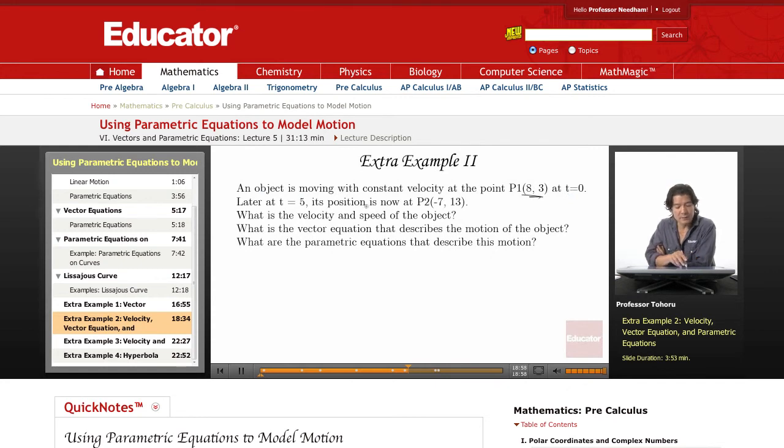Later, t equals 5, this position is now at P2, and it's at a different place. Now again, these are describing different vectors. Now, what is the velocity and speed of the object? What is the vector equation that describes the motion of the object? What are the parametric equations that describe the motions?